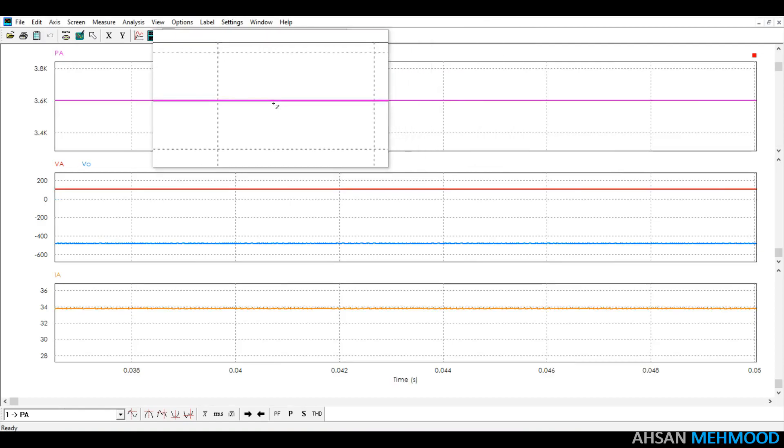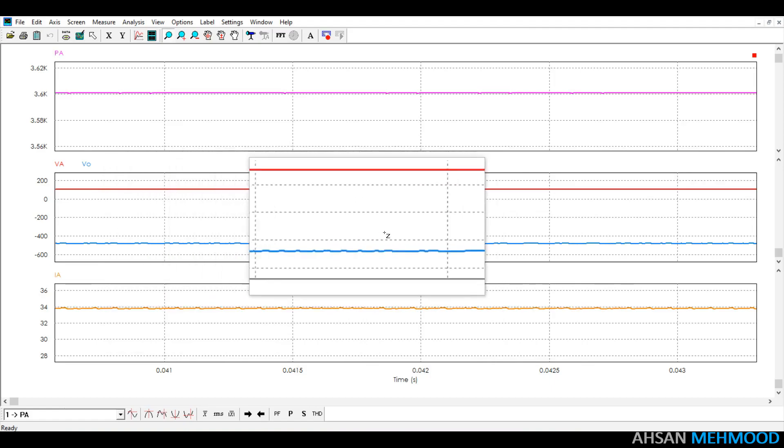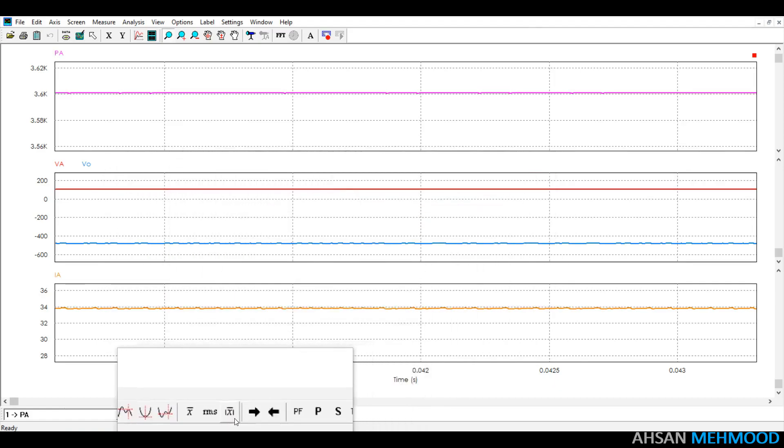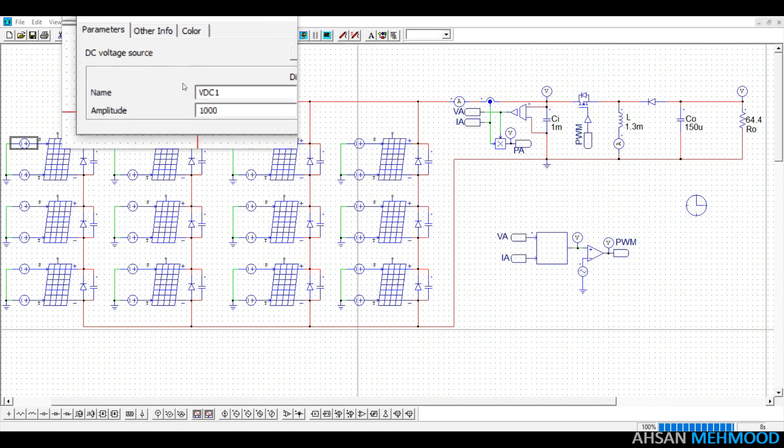Furthermore, the waveforms show a significant reduction in ripples which indicates that our design values are correct. These waveforms were obtained at standard testing conditions that is 1000W per meter square and 25 degrees Celsius.